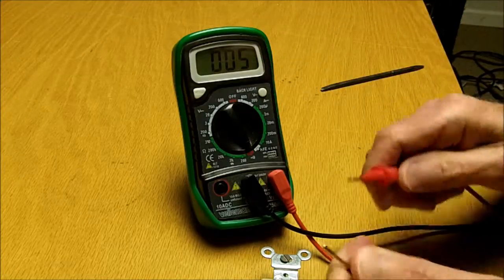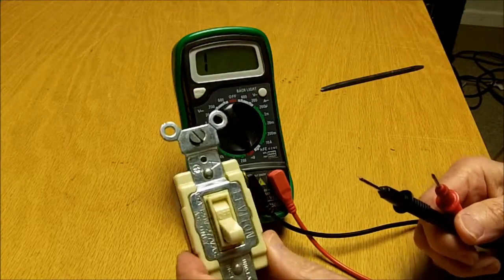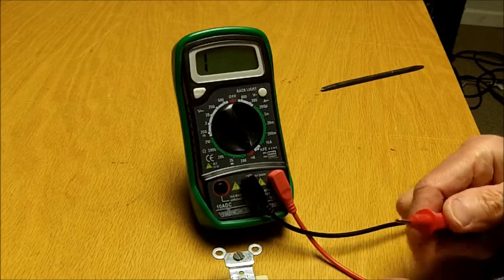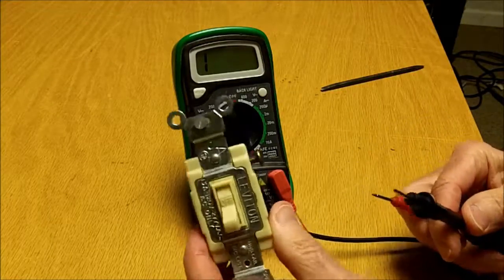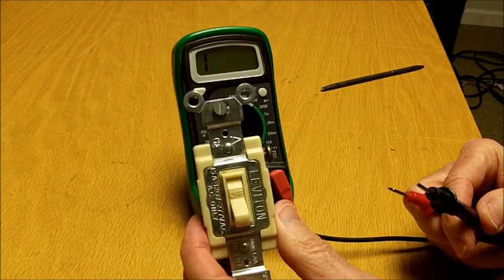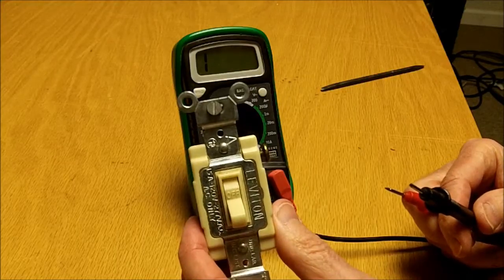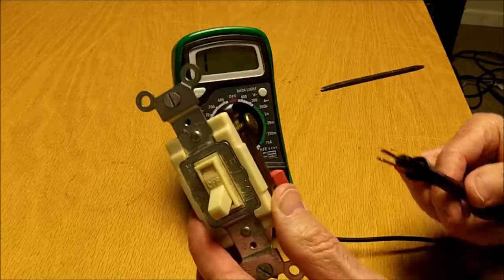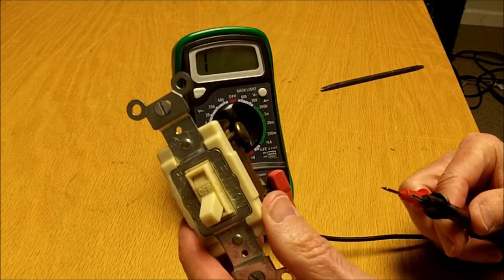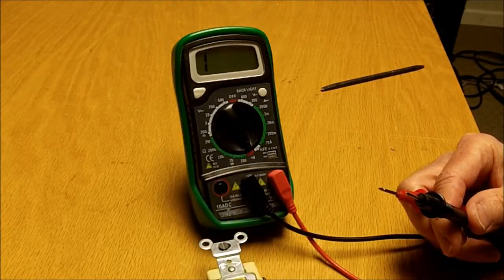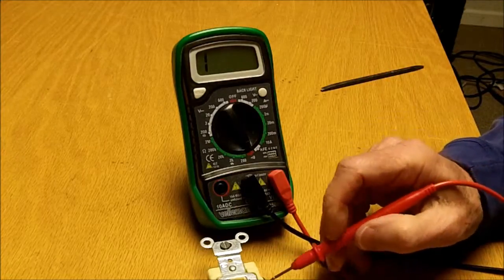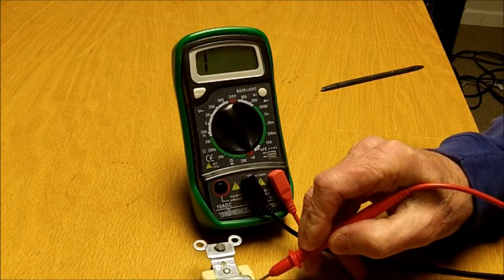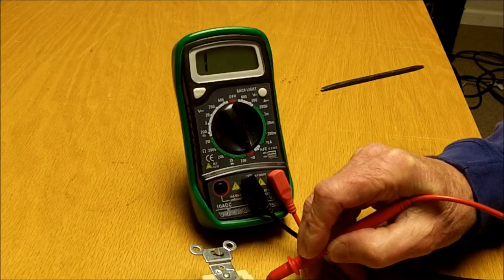So here's our switch and it's got a couple of terminals on the side. To check a switch we want to take it out of the circuit. We obviously would not want to try to measure continuity on a switch that was wired into a circuit, particularly 110 volts AC. You'd get a nasty shock and blow up our meter too.